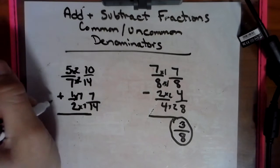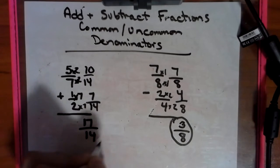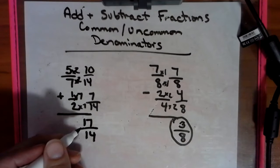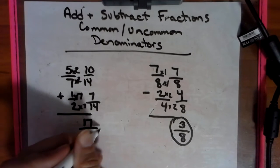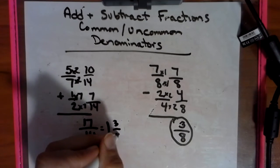And if we're adding here, 10 plus 7 is 17 fourteenths. We cannot leave this because this is an improper fraction. So this is a few days ago's lesson. How many fourteens go into 17? That would be a big one. Leftovers, 3 out of 14.